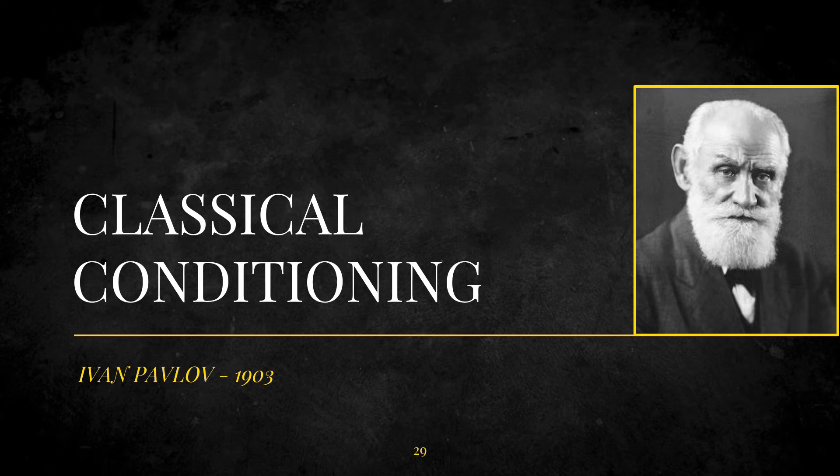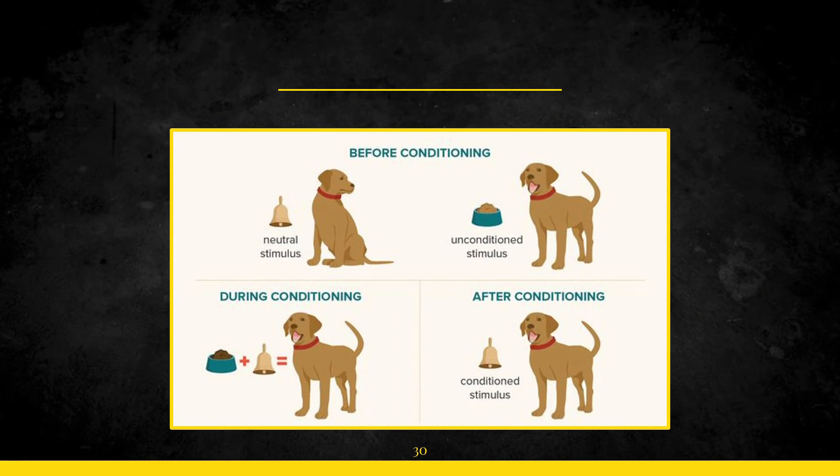Now Ivan Pavlov is known for a very famous experiment that he did by using a dog as a subject and he faced the dog in four different scenarios. In the first scenario he presented food to the dog and the dog started to salivate. In the second scenario the stimulation was just a bell and no response was generated. In this scenario the bell was a neutral stimulus because there was no response stimulated by the dog.